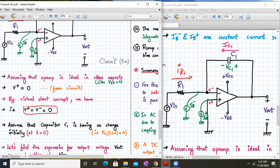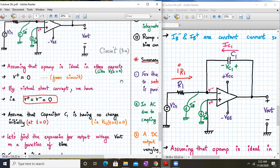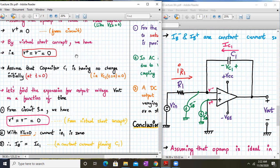Assuming that the op-amp is ideal in other aspects, v+ is approximately equal to zero from the circuit, so we have v+ and v- is equal to zero. After that, the capacitor c1 has no charge initially, that is vc1 at t equal to zero is zero.